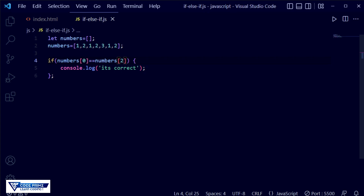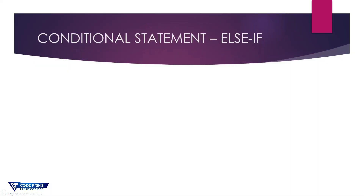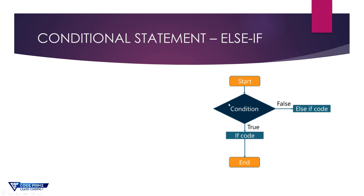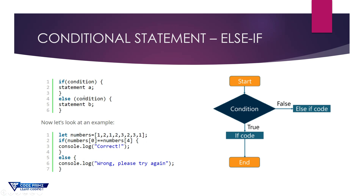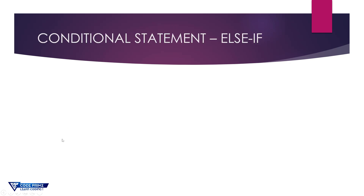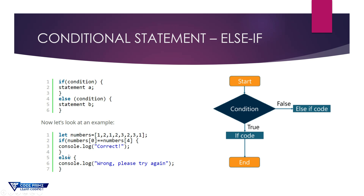Now we are going to learn the else and else-if statements. In the flowchart: if the condition is false, it runs the else block's code; if true, it runs the true code block, then the process ends. For else-if, you need at least three conditions. I'll show a practical example of how to use else-if in Visual Studio Code.